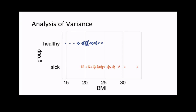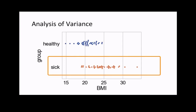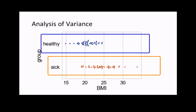The main idea behind analysis of variance, or ANOVA, is we want to determine if there is a difference between two or more groups by testing to determine if their means are different. Let's consider a simpler scenario: suppose we are only interested in observing differences in body mass index between two different populations. Here, we have collected measurements from two populations—a diseased population highlighted in orange, and a healthy control population highlighted in blue.